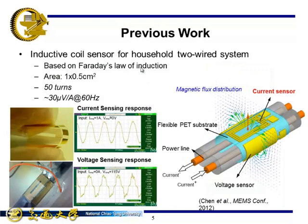Therefore, previously we have proposed a power sensor tag including voltage sensor and current sensor on flexible PI substrate. For the current sensor part, by placing an EW core on the top center of the two-wired power cord to collect the maximum magnetic flux, for a 50 turns design of the coil in an area of 1 x 0.5 cm², the coil sensitivity can have about 30 μV per amp at 60Hz.